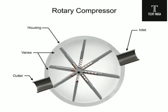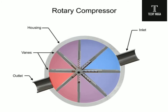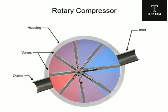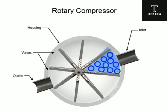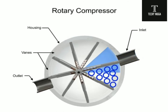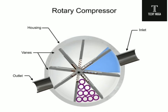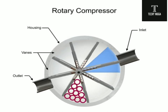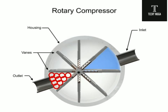As the vanes slide, they create chambers within the cylinder of varying sizes. Air enters at the largest chamber. As the vanes rotate, they retract, causing the chamber to get smaller and compress the air. Air exits at the smallest chamber.